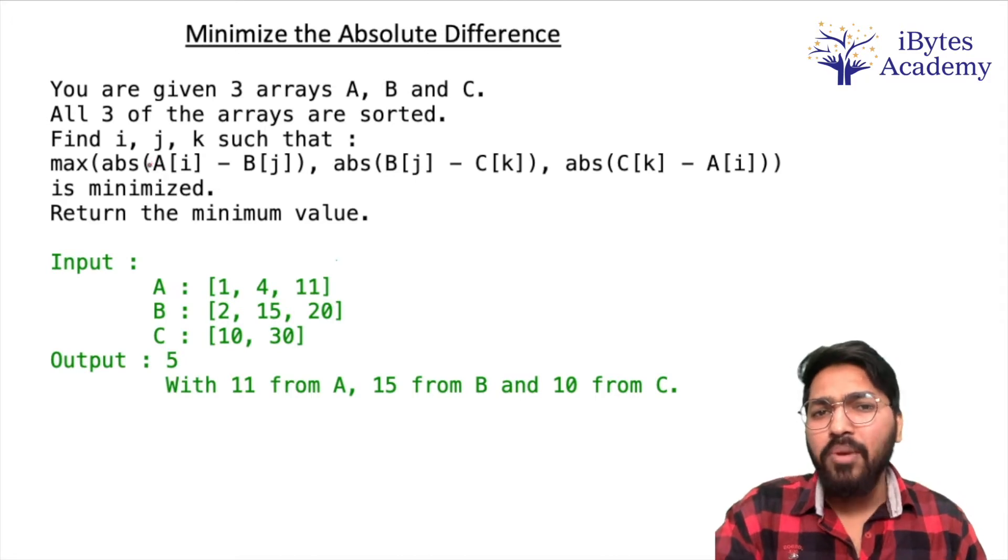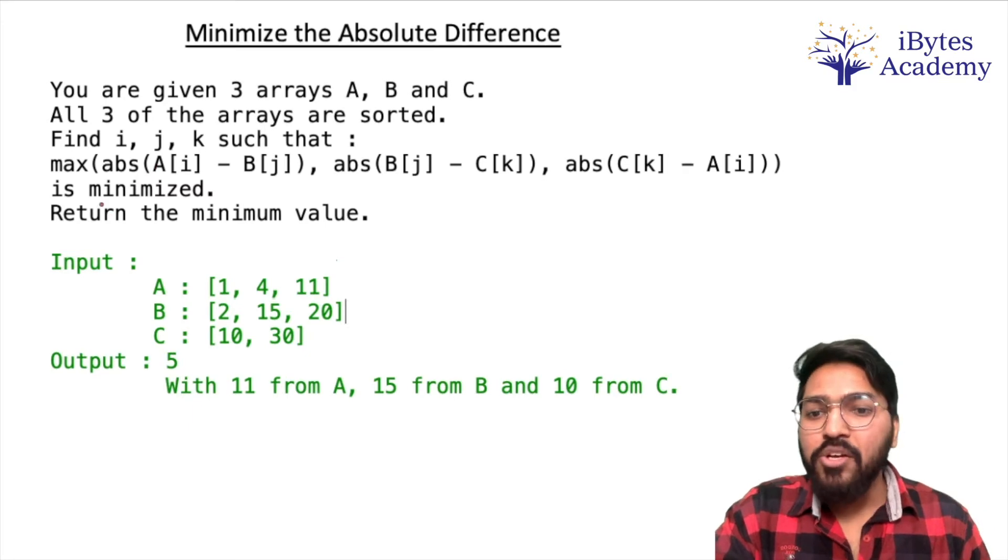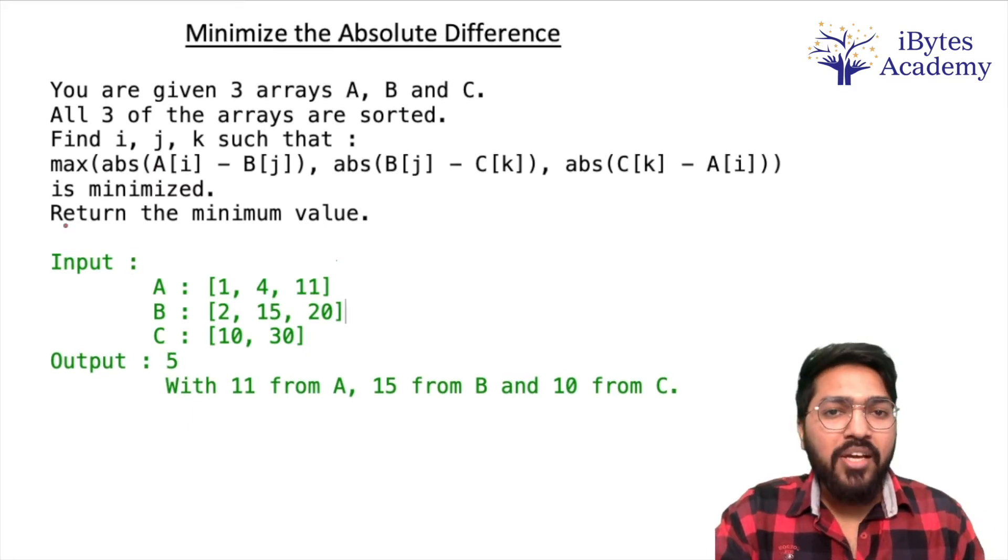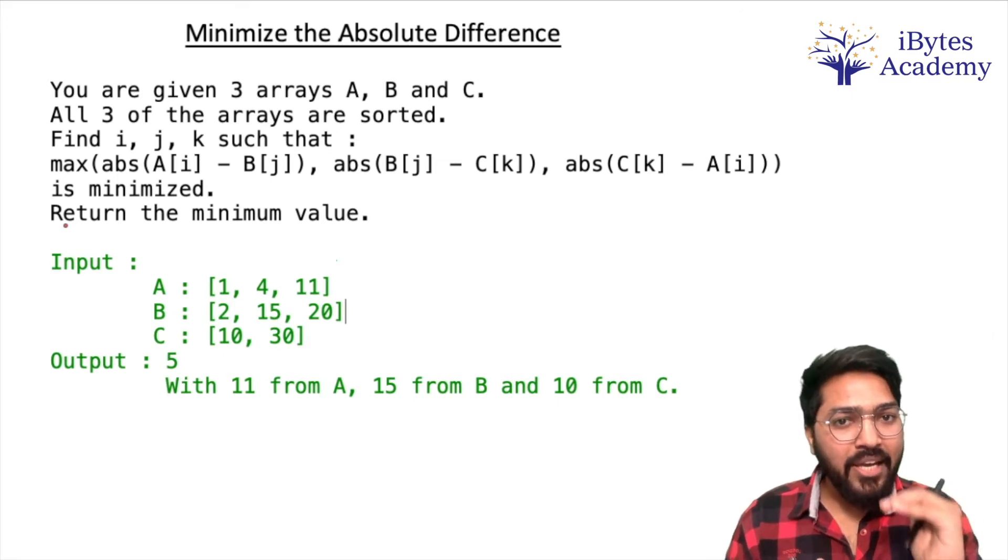This problem might sound very difficult but it is not. It is a very simple problem. So the problem is straightforward: we have three arrays given, all three are sorted. Now in those three arrays we have to take one element.